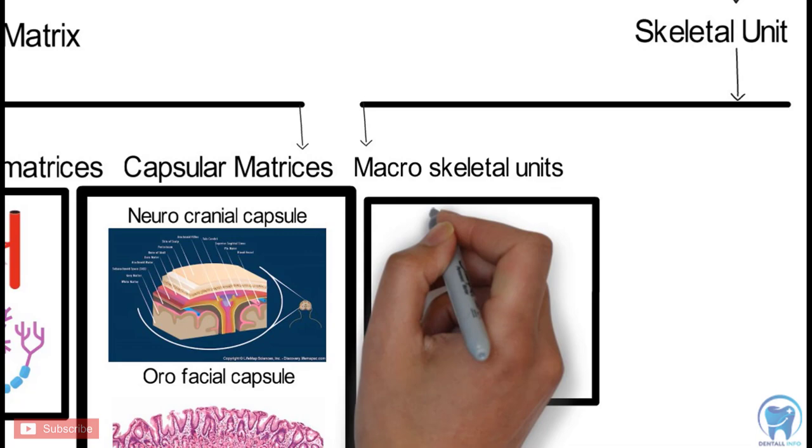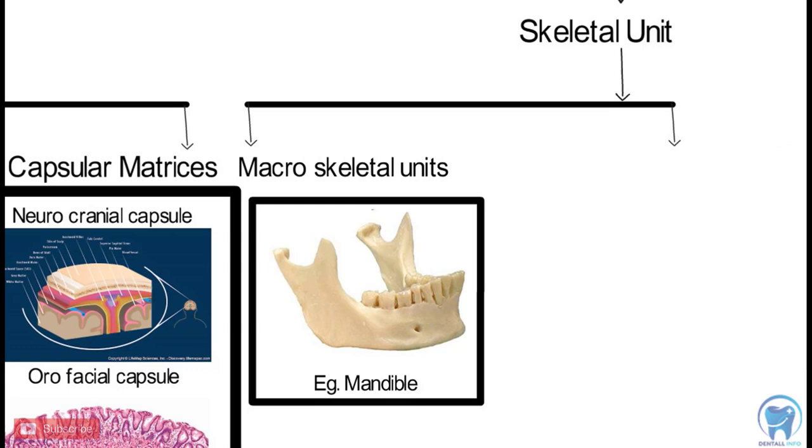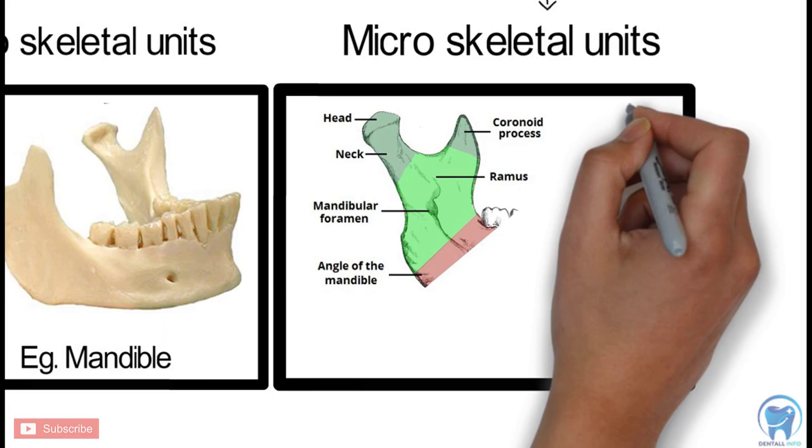And second is the Microskeletal Unit. For example, in the case of the Mandible, the Microskeletal Units are Alveolar, Angular, Condylar, Gonial, Mental, Coronoid, and Basal Microskeletal Units.